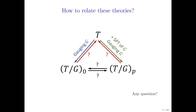To summarize the setup: starting with a theory T with global symmetry G, we can gauge the global symmetry by standard gauging to obtain T/G with subscript 0. Alternatively, we can add a symmetry-protected topological phase of symmetry G and then gauge, obtaining different theories labeled by discrete theta angle P, written as T/G with subscript P.